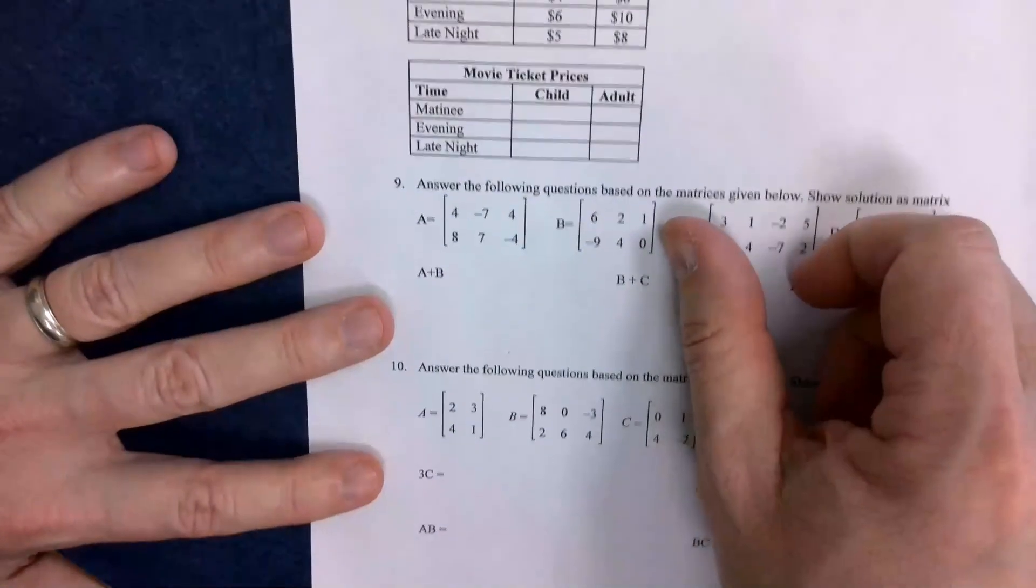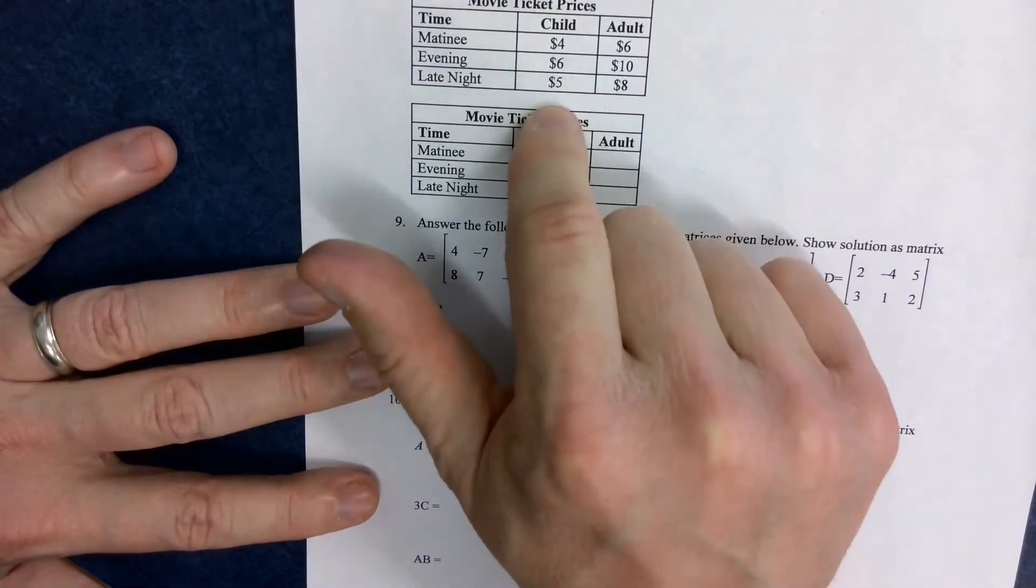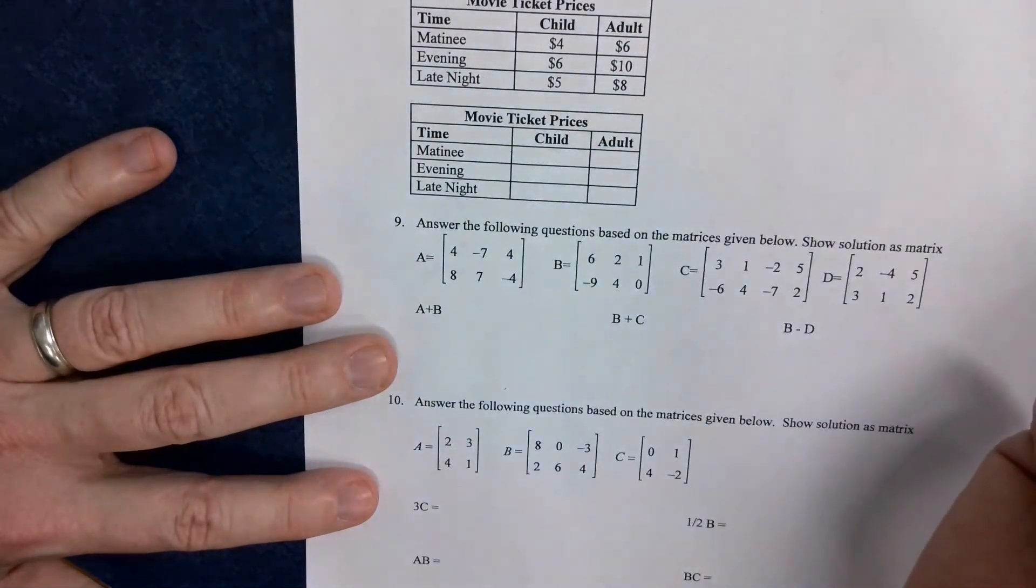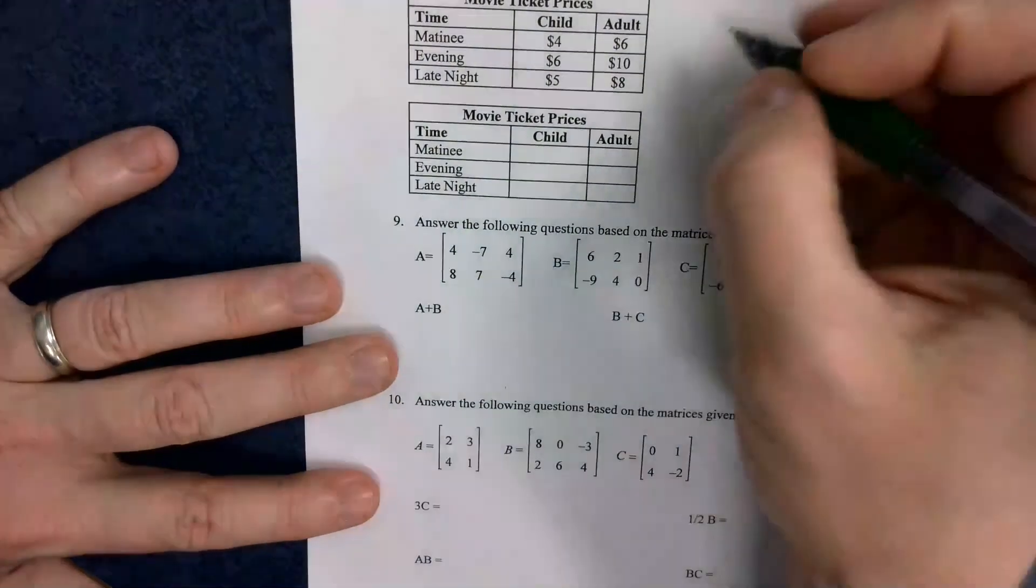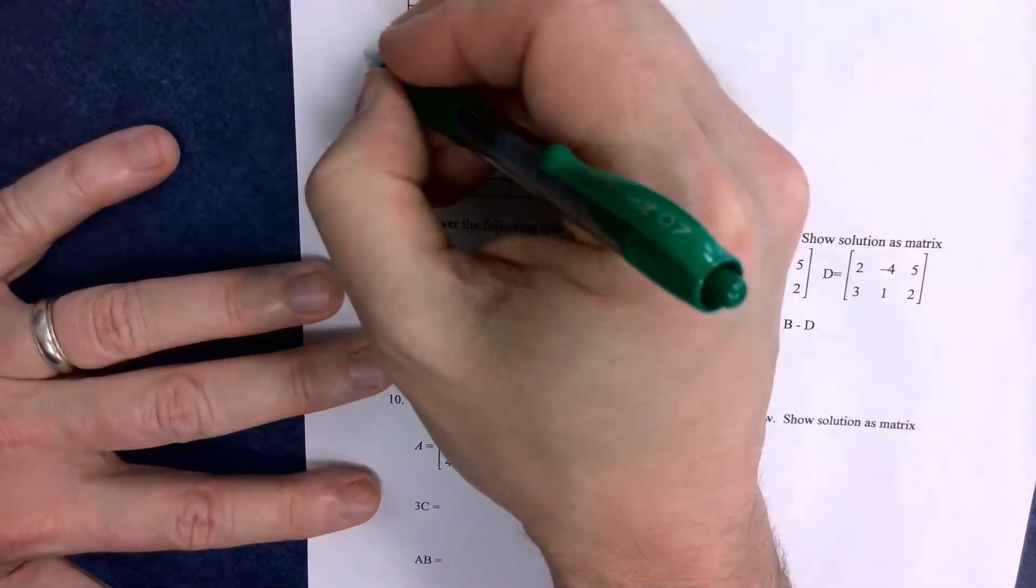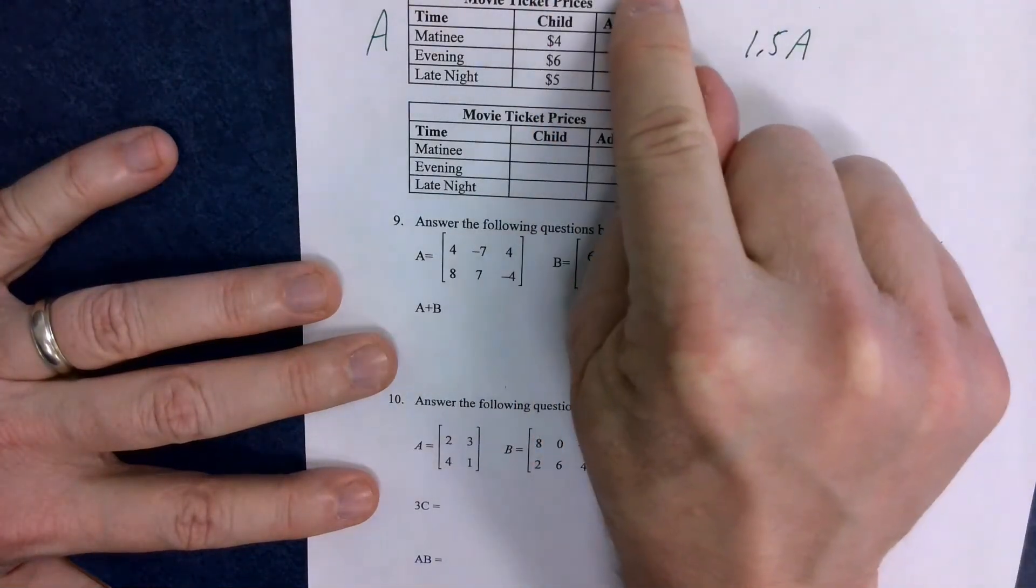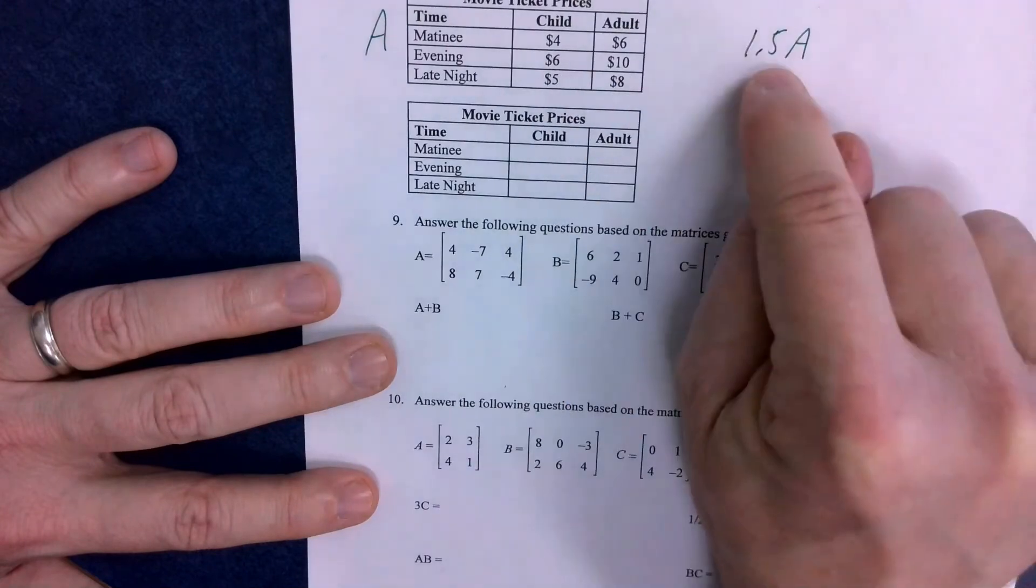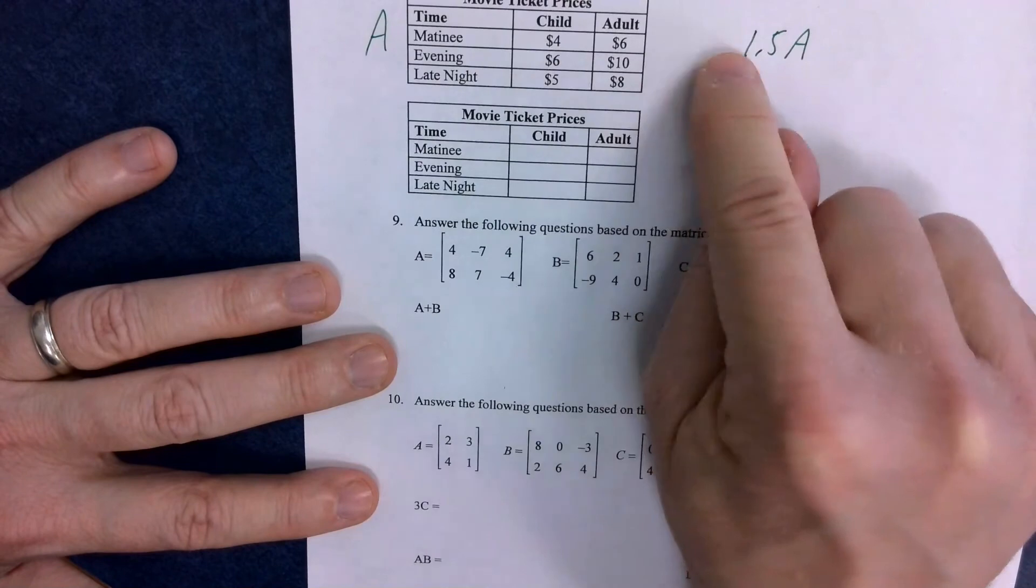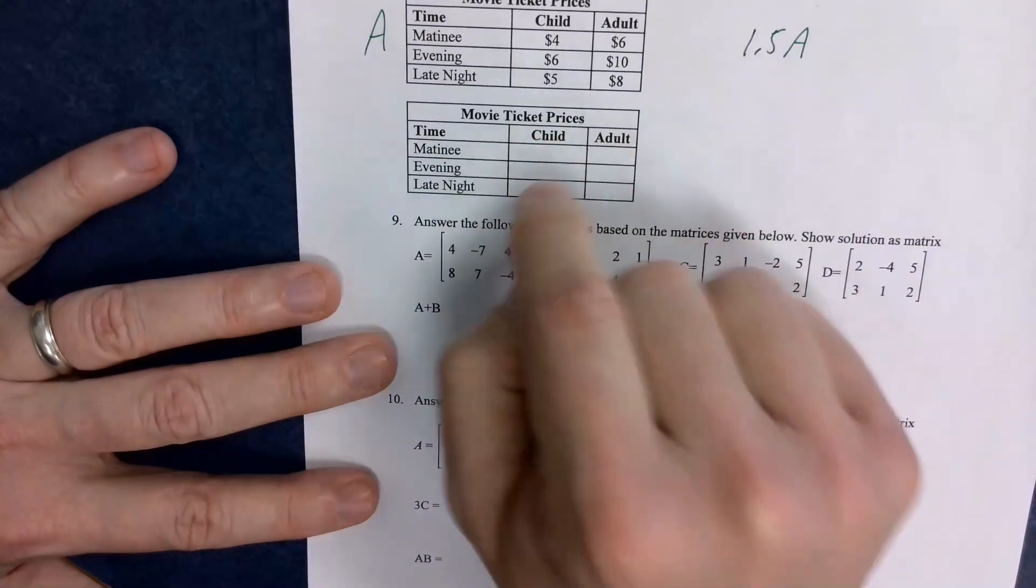We flip it over here. This says a movie theater marks up ticket prices by 50%. Well, these are all the prices for the children based on a matinee, evening, and late night. And for an adult based on a matinee, evening, and late night shows. If it was marked up by 50%, that would mean a scalar multiplication, right? Whatever this matrix is. If this is A, I would do 1.5 times A. Because 50% is 0.5. The 1 represents the original cost. So 1 plus a markup of 50%, 1.5 A. And then all of those prices would go in there.